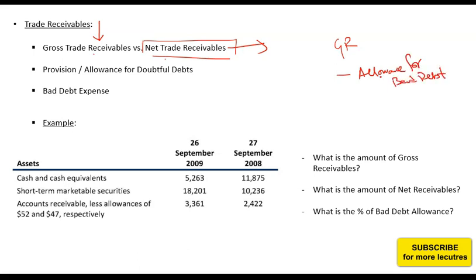Net receivables equal gross receivables minus the allowance for bad debt, also known as the provision for bad debt. When you have receivables from customers, there is always a chance that a customer can default or may not pay you in the future. To account for that risk, you are required to book an allowance or provision for bad debt — a loss you record today in expectation of a future default.